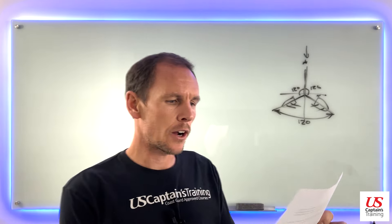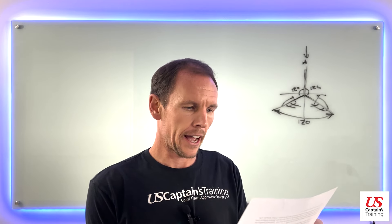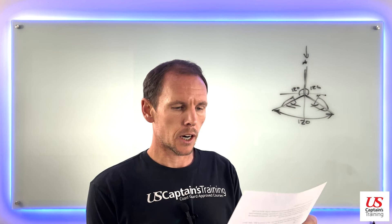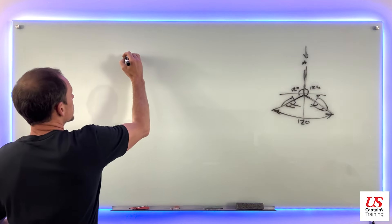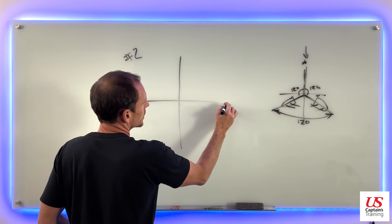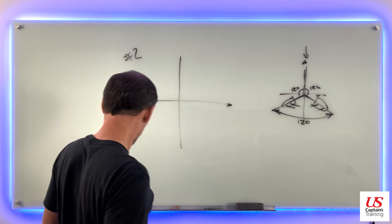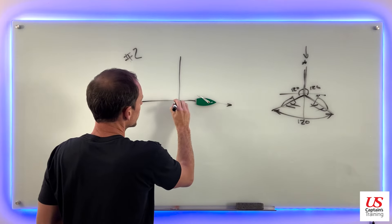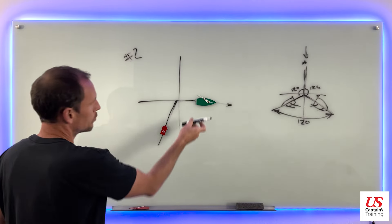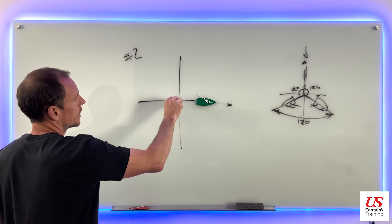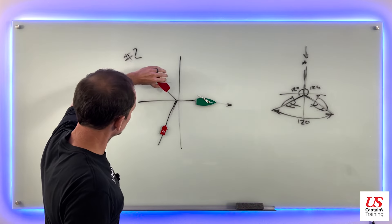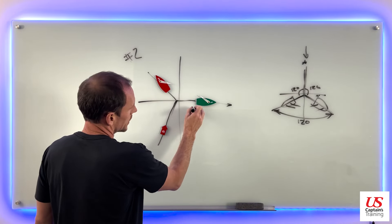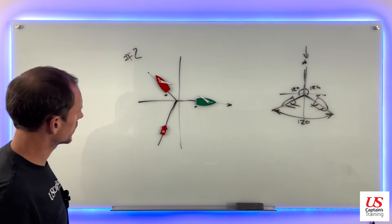Problem two says you're sailing downwind on a starboard broad reach with a course of 90 degrees. After jibing to a broad reach on port tack, what will your new course be? Starboard broad reach, course 90 — that's our course going this way. Red port, green starboard — this is a starboard broad reach. That means the wind is somewhere like here, and if we jibe, bringing our stern through the wind, we'll end up somewhere over here on a port broad reach.